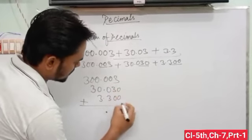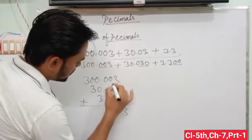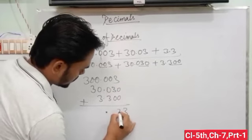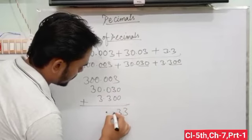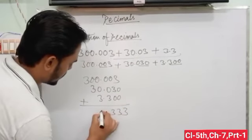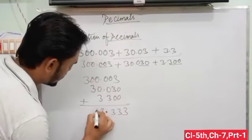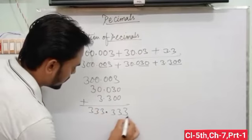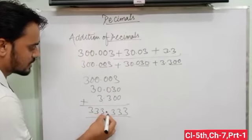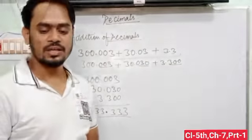Then 3 plus 0 plus 0 equals 3. 0 plus 3 plus 0 is 3. 0 plus 0 plus 3 is 3. Now 3 plus 0 is 3. So this is your result: 333.333.